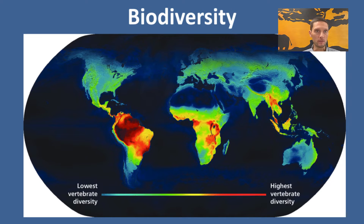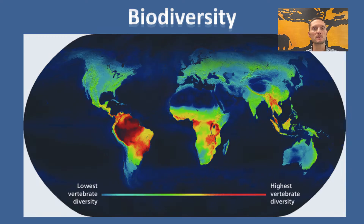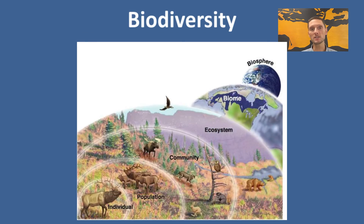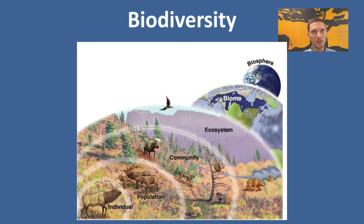We can look at biodiversity at a couple of different levels. Starting most broad, this would be within ecosystems. An ecosystem is a combination of all of the living things in an area, as well as the abiotic — the non-living components — such as water temperature, sunlight, pH, et cetera. At the ecosystem level, this means all combinations of species living together in the same community.